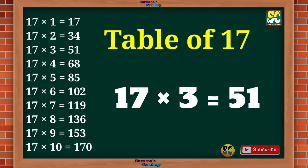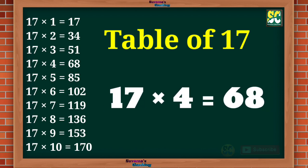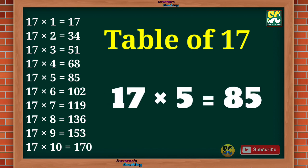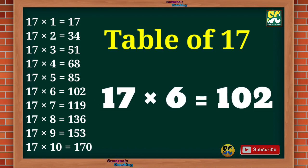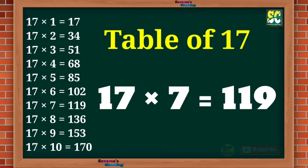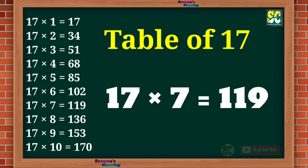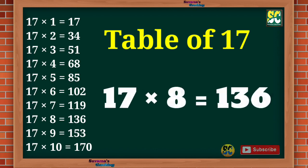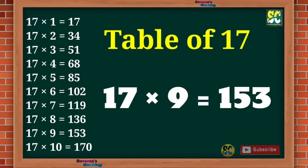Table of 17. 17 1s are 17, 17 2s are 34, 17 3s are 51, 17 4s are 68, 17 5s are 85, 17 6s are 102, 17 7s are 119, 17 8s are 136, 17 9s are 153.